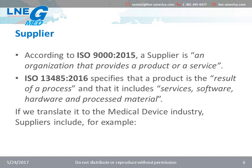In ISO 13485:2016, it is specified that a product is the result of a process, and that it includes services, software, hardware, and processed material. Where the standard uses the word product, it can cover either a product and/or a service.